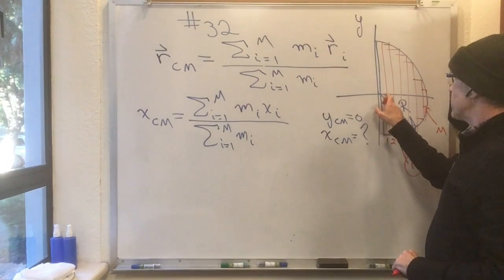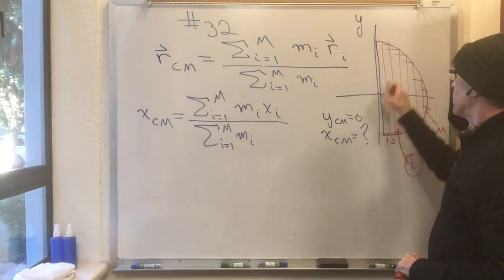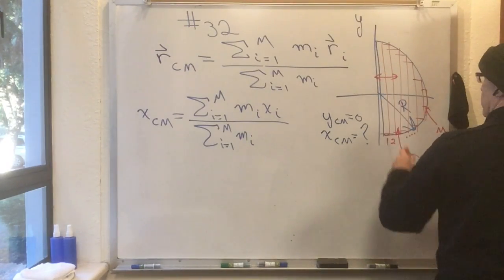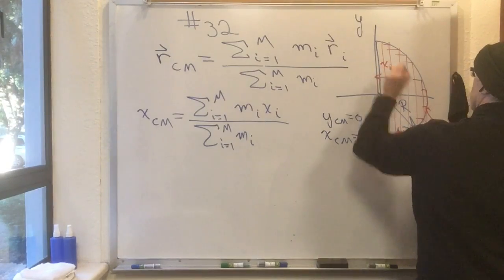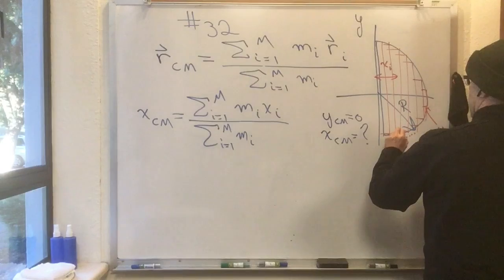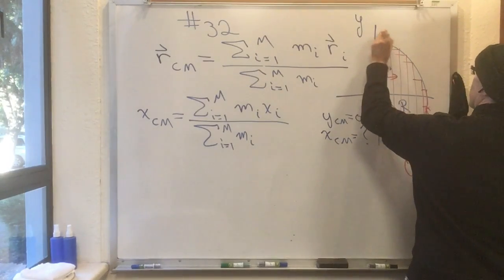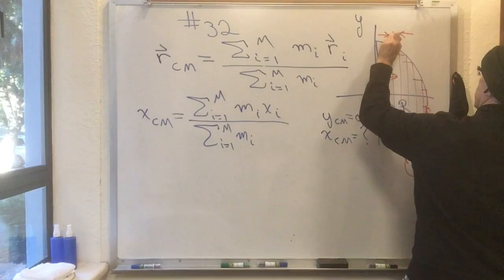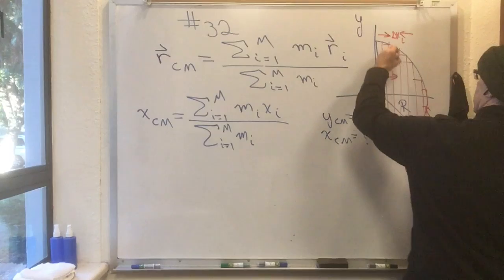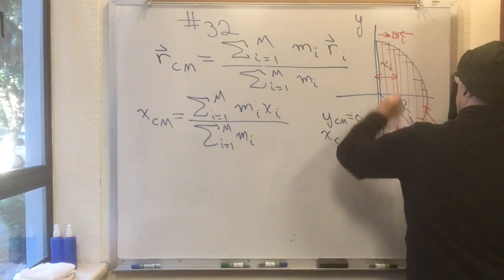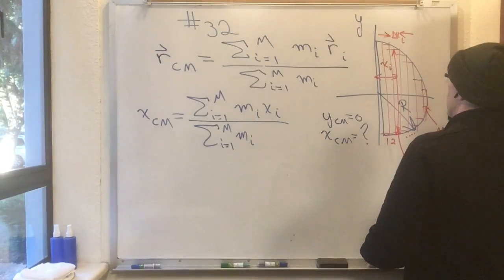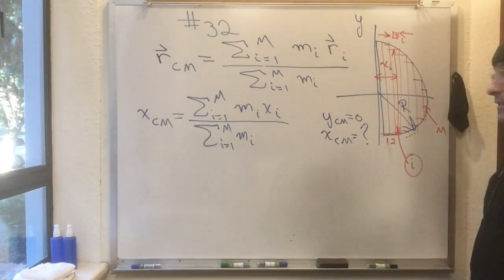Well, because each of these strips, the whole strip, has the same x value. So, the i-th strip has x value of x sub i. And, the area of the i-th strip is however wide the i-th strip is, which we can call delta x sub i. And then the only thing we don't know here is, well, how tall is the i-th strip? So, if we knew how tall the i-th strip was, then we'd know the mass of the i-th strip.